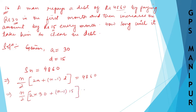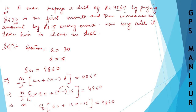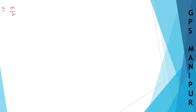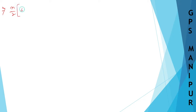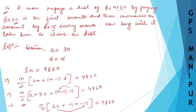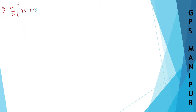So 2 into 30 plus N minus 1, and D is 15 — which is equal to 4860. Now N divided by 2 into 60 plus 15N minus 15 is equal to 4860.